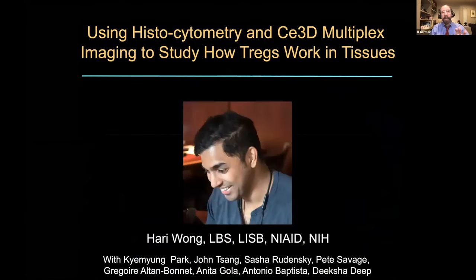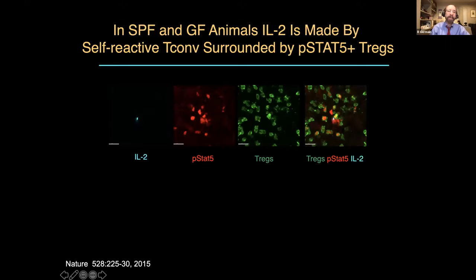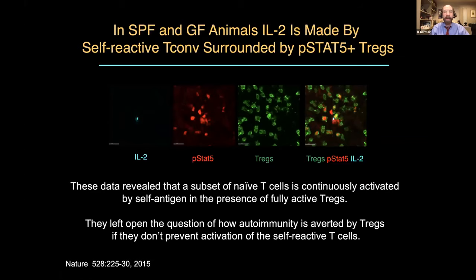I want to come to the science in which we've used histocytometry and 3D multiplex imaging to arrive at a new understanding of how regulatory T cells work in tissue. This is the fantastic work of Harry Wong in the lab, in collaboration with Kim Young-Park, John Tsang's lab, Sasha Radensky, Pete Savage, and others. This is built off an observation we published a few years ago showing that Tregs do not prevent autoreactive cells from becoming activated. The autoreactive cells become activated, they even make cytokines such as IL-2, but that IL-2 is sensed by neighboring Tregs which become P-STAT-5 positive, whereas the autoreactive cell itself does not show P-STAT-5 positivity.